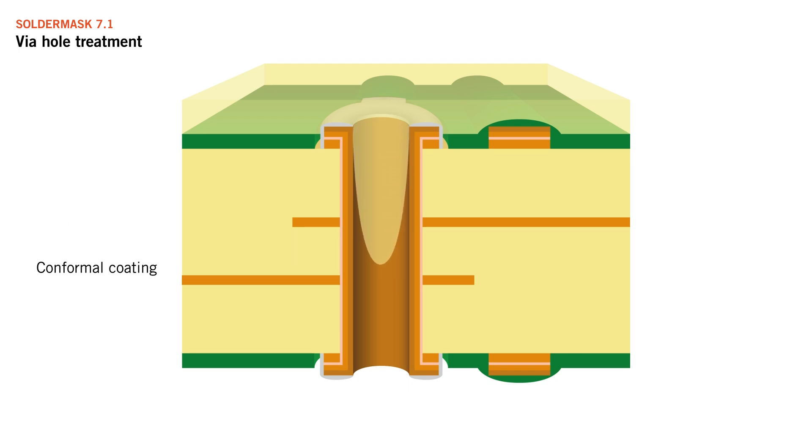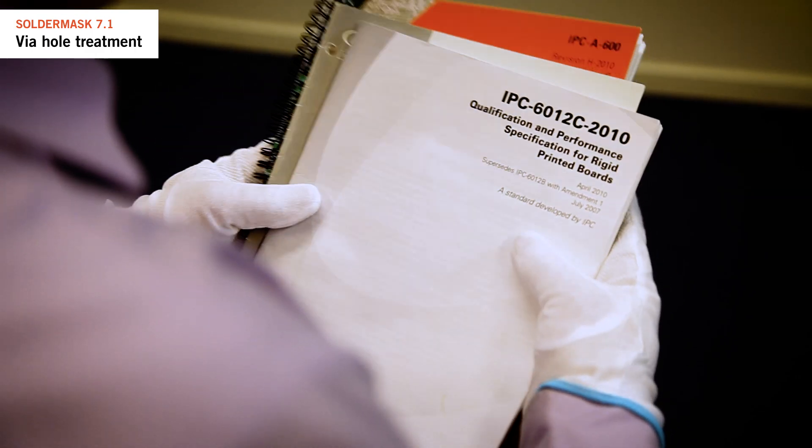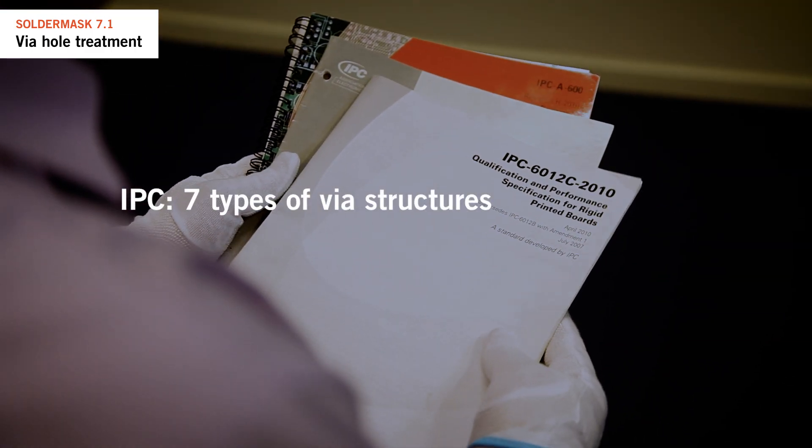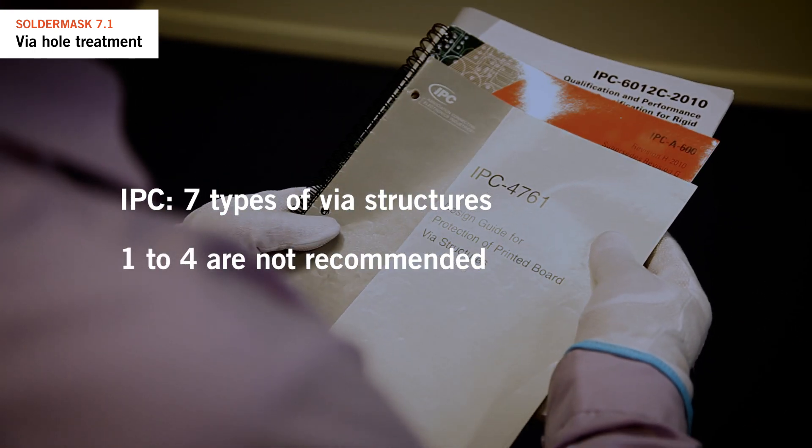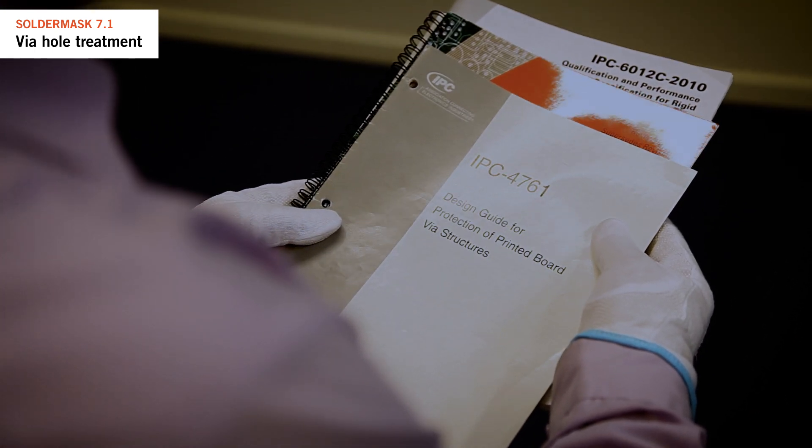According to IPC, there are seven types of via, but types one to four are not recommended. We base the NCAB demands upon the type 6 recommendation for plugging the holes.